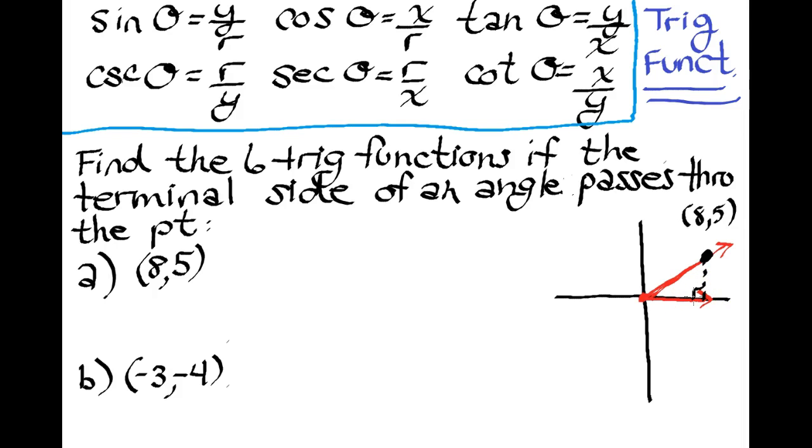From the coordinates of the point, I know that the x portion of my triangle is 8, the y portion, this vertical leg, is 5. So the only thing left to do really for the triangle is to find the hypotenuse, which is r. We represent it as r.